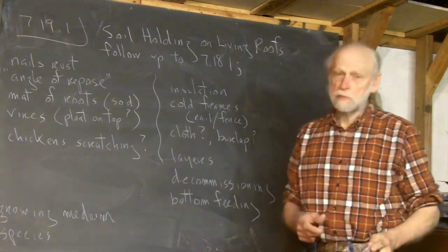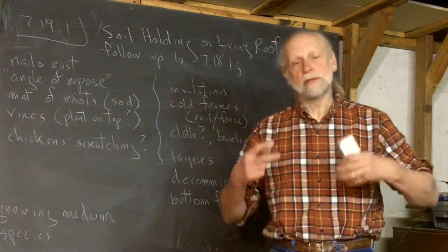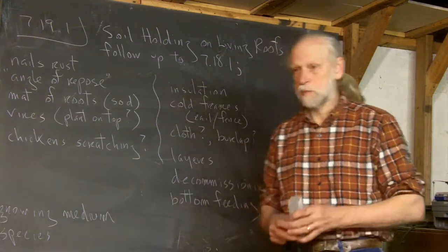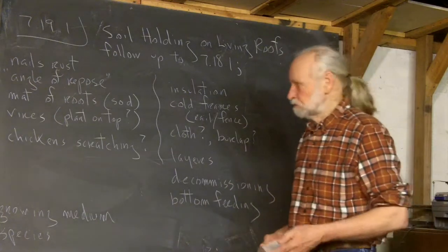Nails rust. Ultimately, these pallets are held together with nails, and ultimately those nails will rust, especially if they're in soil. And so, for it to be fairly permanent, you can't count on those nails.